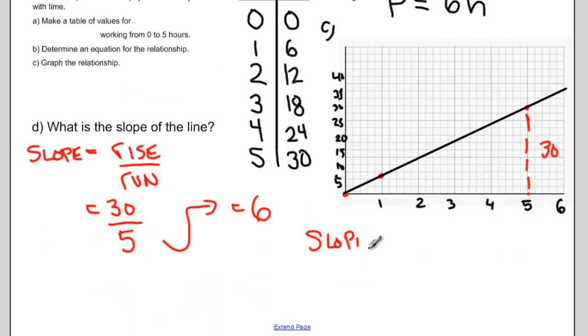Slope has a few different names that we'll use in this class. Slope is a rate of change or a constant of variation.